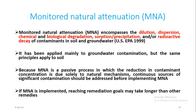Monitored Natural Attenuation (MNA) encompasses the dilution, dispersion, chemical and biological degradation, sorption or precipitation, and radioactive decay of contaminants in soil and groundwater. MNA has been applied mainly to groundwater contamination, and the same principles apply to soil. Because MNA is a passive process in which reduction in contaminant concentration is due solely to natural mechanisms, continual sources of significant contamination should be addressed before implementing MNA. If monitored natural attenuation is implemented, reaching remediation goals may take longer than other remedies.